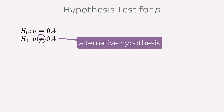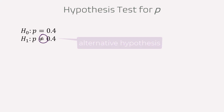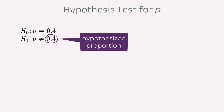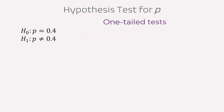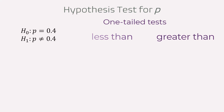Hence the two-tails. 0.4 here is called the hypothesized value, which is often represented as p0. For one-tailed tests, we could have p less than in one case and p greater than in another case.